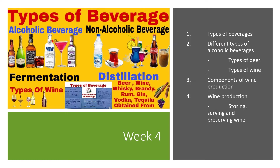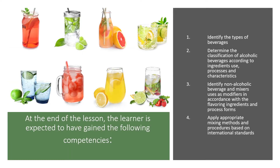This lesson contains the following types of beverages: different types of alcoholic beverages, components of wine production, wine production, storing, serving, and preserving wine. At the end of the lesson, you are expected to have gained the following competencies: 1. Identify the types of beverages. 2. Determine the classifications of alcoholic beverages according to ingredients used, processes, and characteristics. 3. Identify non-alcoholic beverages and mixers used as modifiers in accordance with the flavoring ingredients and process form. And 4. Apply appropriate mixing methods and procedures based on international standards.